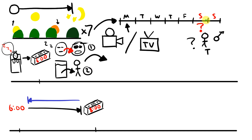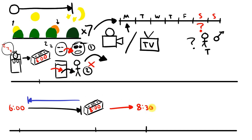And on Saturdays? Tom wakes up at eight o'clock, but he doesn't get out of bed. He stays in the bed until eight-thirty. On Saturdays, Tom wakes up at eight o'clock and gets out of bed at eight-thirty. He stays in bed from eight till eight-thirty.